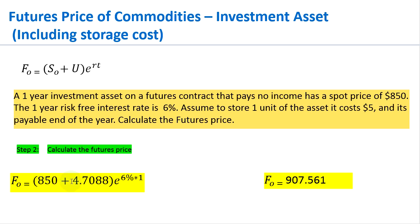The intuition behind adding the storage cost to the spot price is that if you are storing the investment asset and do not include this, you'll be understating your futures price. Your futures price will be less than nine hundred and seven dollars and fifty-six cents, which won't be a fair price because you had to store this asset for a year. Remember, if your one-year futures price is less than or more than nine hundred and seven dollars and fifty-six cents, then there are arbitrage opportunities.